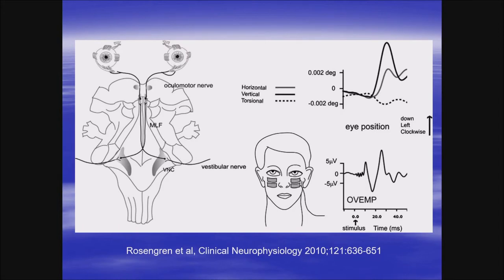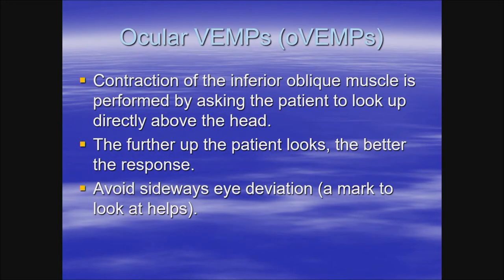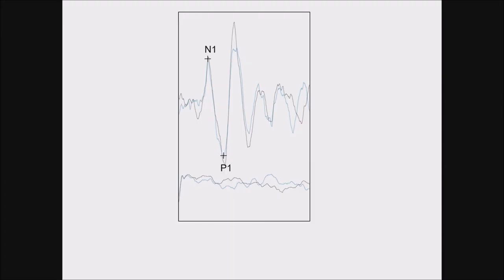The setup is again simple: an active electrode is placed on the orbital ridge in the middle, the reference electrode is below that, and the ground is on the forehead or sternum. The patient is asked to look upward as much as they can — this activation is actually easier than contracting the sternocleidomastoid. The patient must look vertically upward without looking sideways. The O-VEMP is an excitatory response — rather than a positivity, we record a negativity with the initial peak going upward. You do not need to record EMG for the O-VEMP.